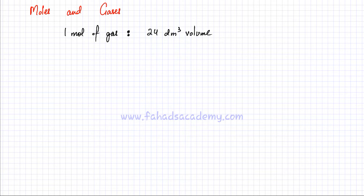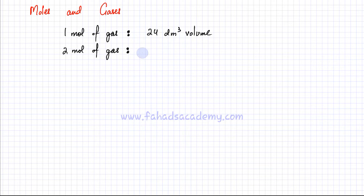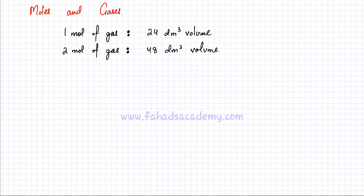You're going to use this statement to convert moles of gas into volume. For example, if I have two moles of gas — and remember it could be any gas, oxygen or hydrogen — you can use ratios. You know that one mole of gas occupies 24 dm³, so two moles of gas will occupy double that amount: 48 dm³.